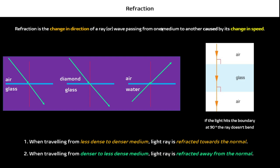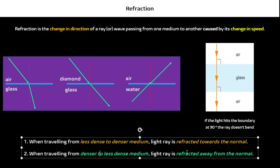In air, there are not many particles, so it will be very fast. But when it is in glass, there will be a lot of particles, so the speed of light will be slower in glass than in air, and the refraction is going to cause the change in direction. When you're travelling from a less dense to a denser medium, such as air to glass, your light ray will be refracted towards the normal. When you're travelling from a denser to less dense medium, the light ray is refracted away from the normal.